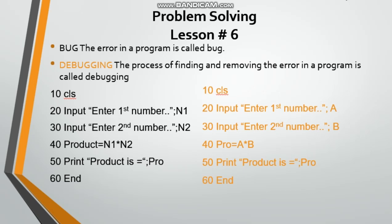I have created a corrected version of the program. CLS, input enter first number variable A. N1 will also work, but sometimes N1 and N2 doesn't work, that's why I have A and B variables. After this, Pro equals A*B, and print product is Pro. Here I have used variable Pro.